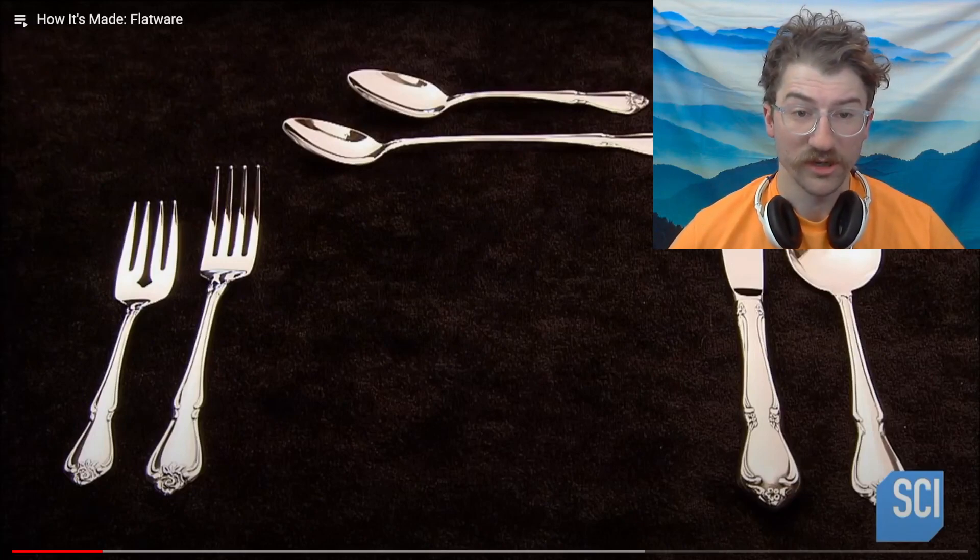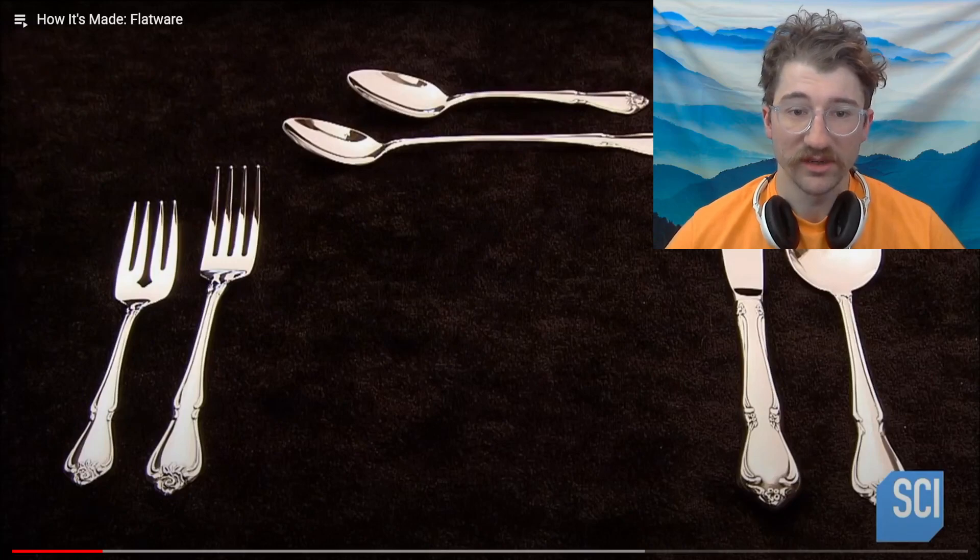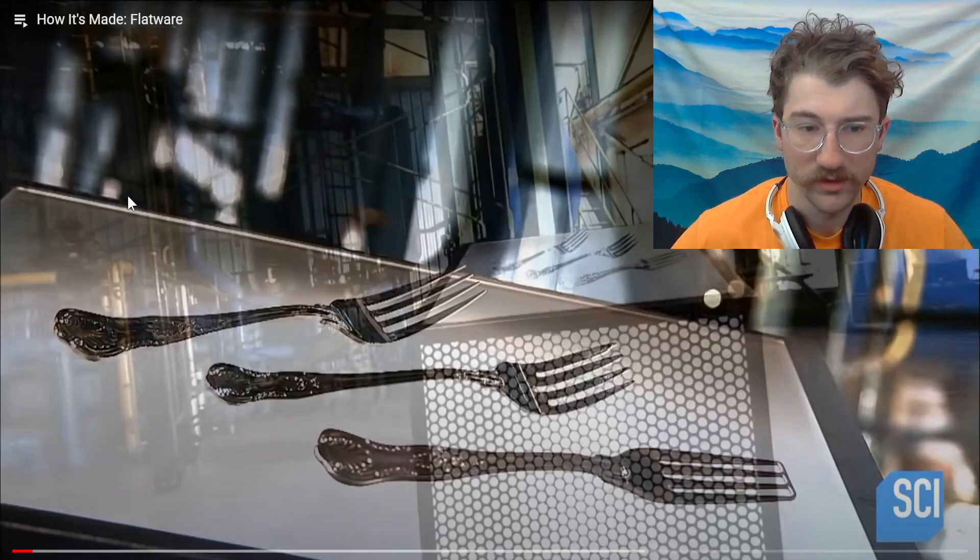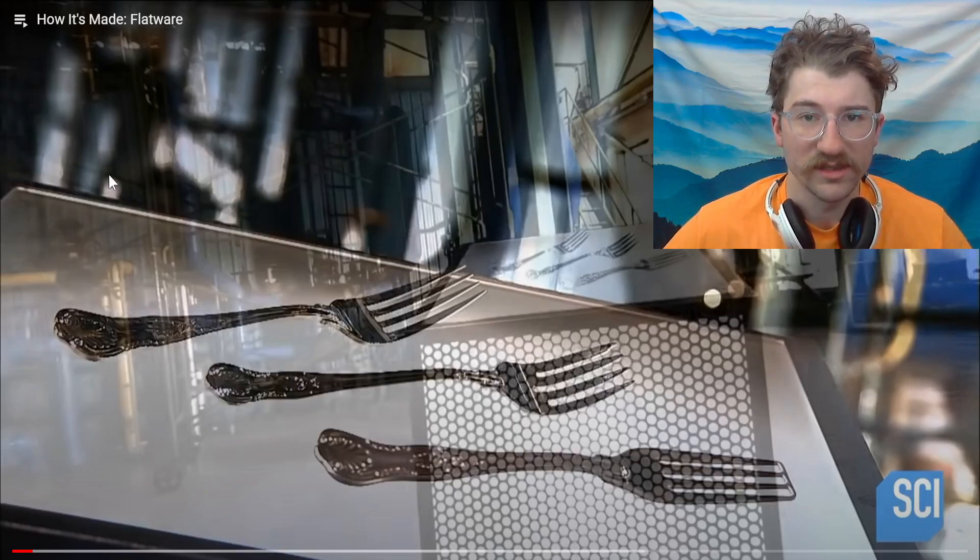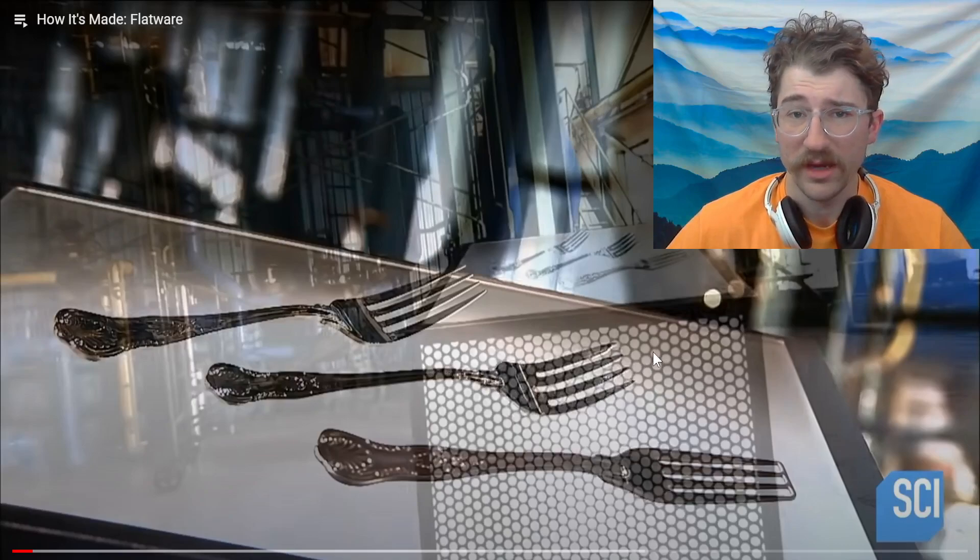We're going to be watching an old How It's Made episode, and in this episode is specifically how silverware is made. In this case stainless steel silverware. I've always been interested in learning more about this just because I assume it's going to be involving press dies and stamps and equipment for bending and possibly even polishing. I think polishing is probably done by hand. We'll have to wait and see really.